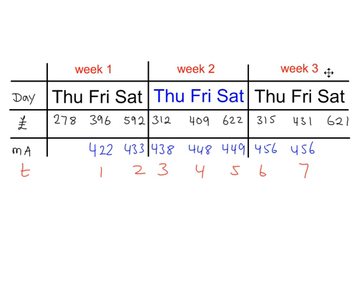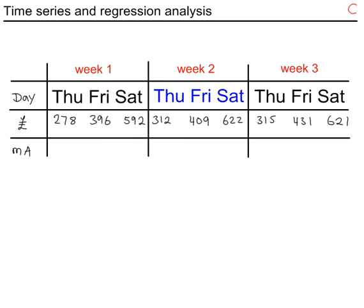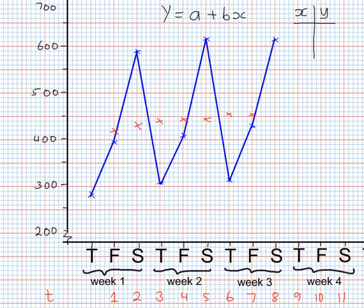This is the table that was used to produce the graph that you've just seen. So you've got the weeks, Tuesday, Friday, Saturday, the three points which keep repeating. This is the actual time series here. The moving average values. And now you've got these additional t values here. These are the same numbers that you've seen on the graph along here.